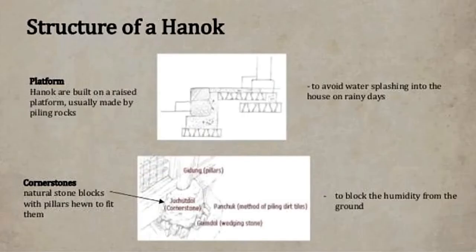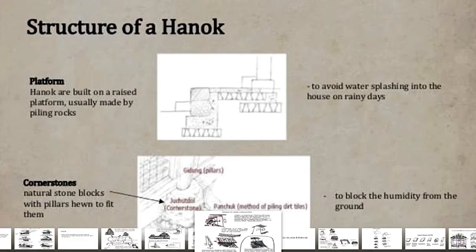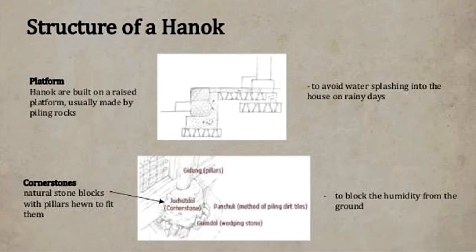The structure of hanok: hanok are built on raised platforms, usually made by peeling rocks. Natural stone blocks with pillars hewn to fit them avoid water splashing into the house on rainy days. The platform also blocks humidity from the ground.